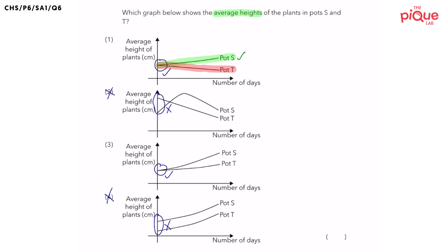Now, is this possible? Would the plants in pots T be growing shorter? No. In fact, the height of the plants should not decrease. So with that, we can eliminate option one.